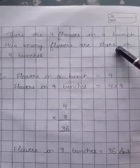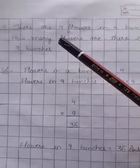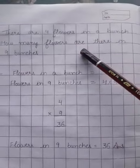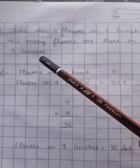How many flowers are there in nine bunches? How many means kill ne, flowers means full, are means hun, they are in nine bunches.